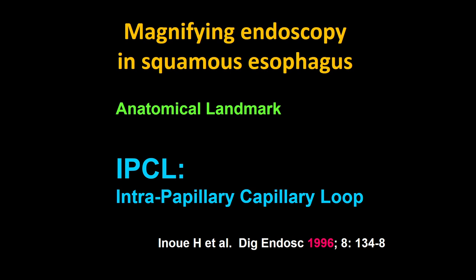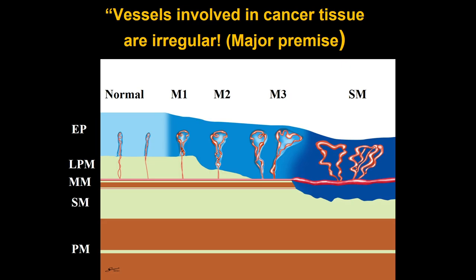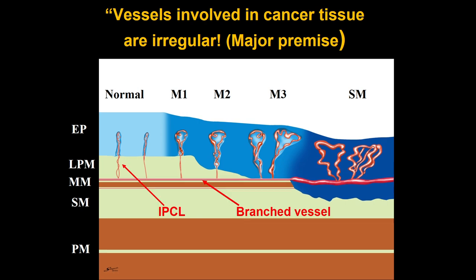The anatomical landmark of magnifying endoscopy in the squamous esophagus is the same as in the anus canal. IPCL is one of the good indicators. IPCL starts from a branching vessel disseminating at the level of the muscularis mucosa, spreading horizontally. From the branching vessel, the IPCL comes vertically up to the surface of the epithelium.